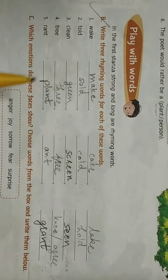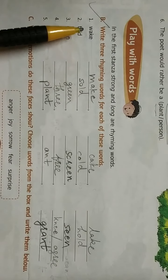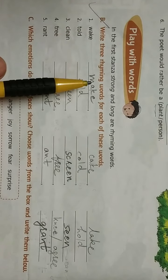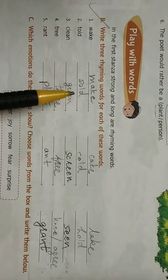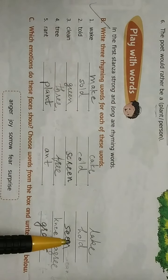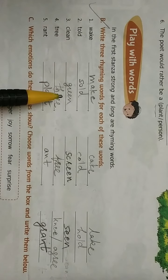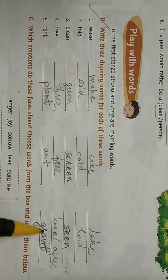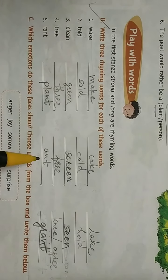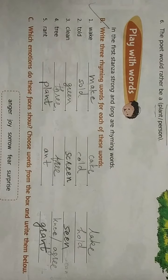So we have to write three rhyming words for wake: make, cake, lake. For told: sold, cold, hold. For clean: green, screen, seen. For tree: three, free, me, agree. For plant: aunt, grunt. In exam you can give your own rhyming words.